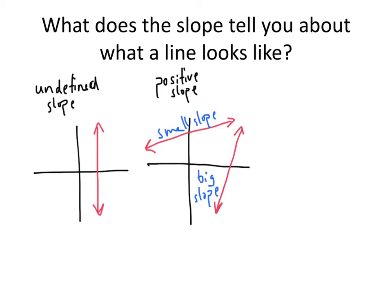If I end up with a negative slope, that means that as I go from left to right, my line is going down. So a line with a negative slope is going to look something like this.